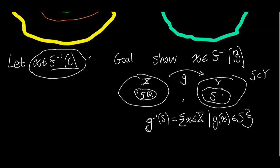So if we have some point a in the inverse image of S under g, then by definition g(a) must be in S. And vice versa, if g(b) is in the set S, then b must be in the inverse image of S under g.